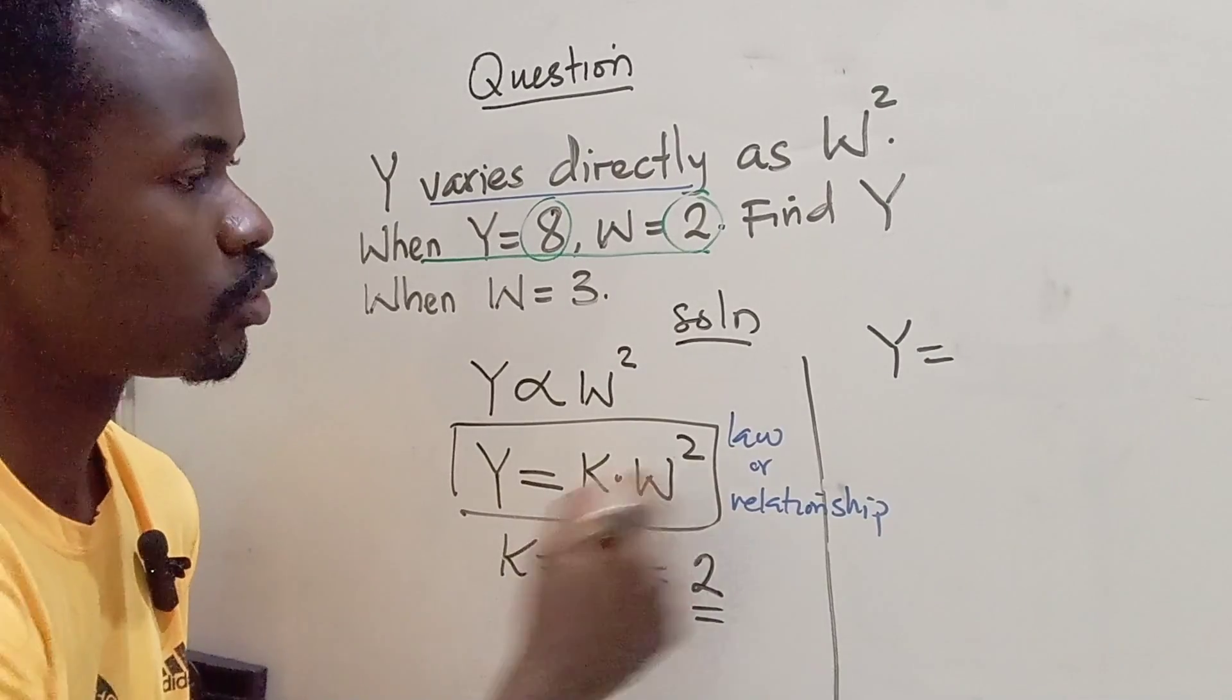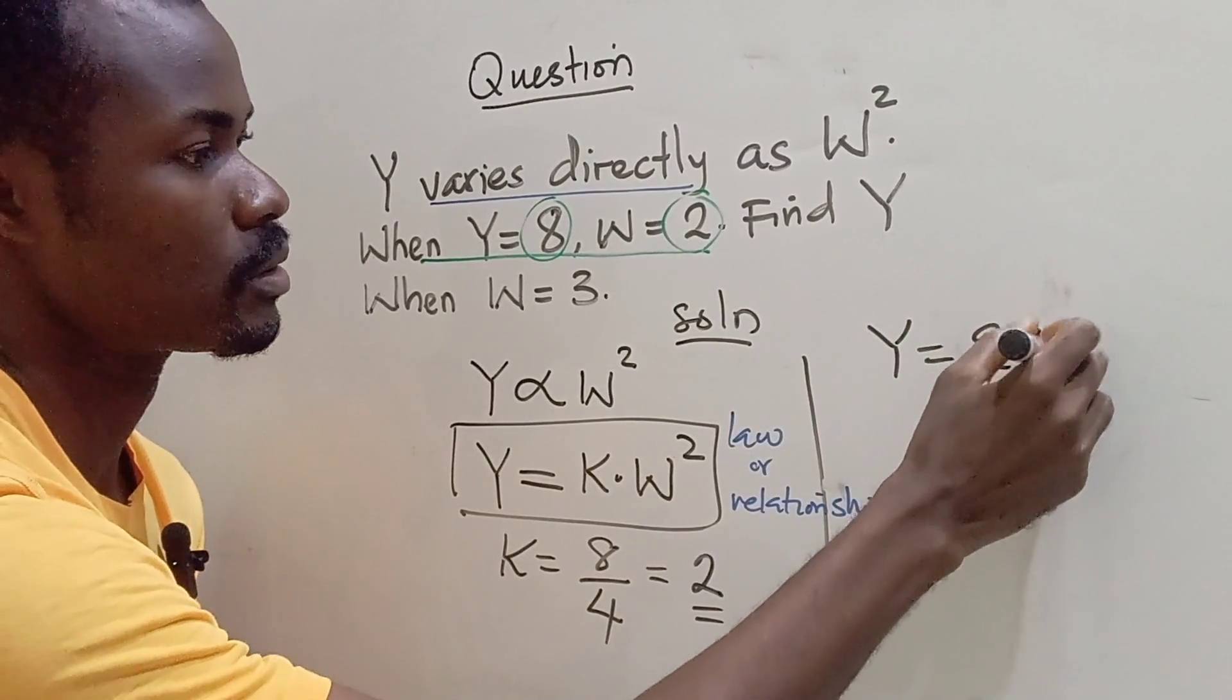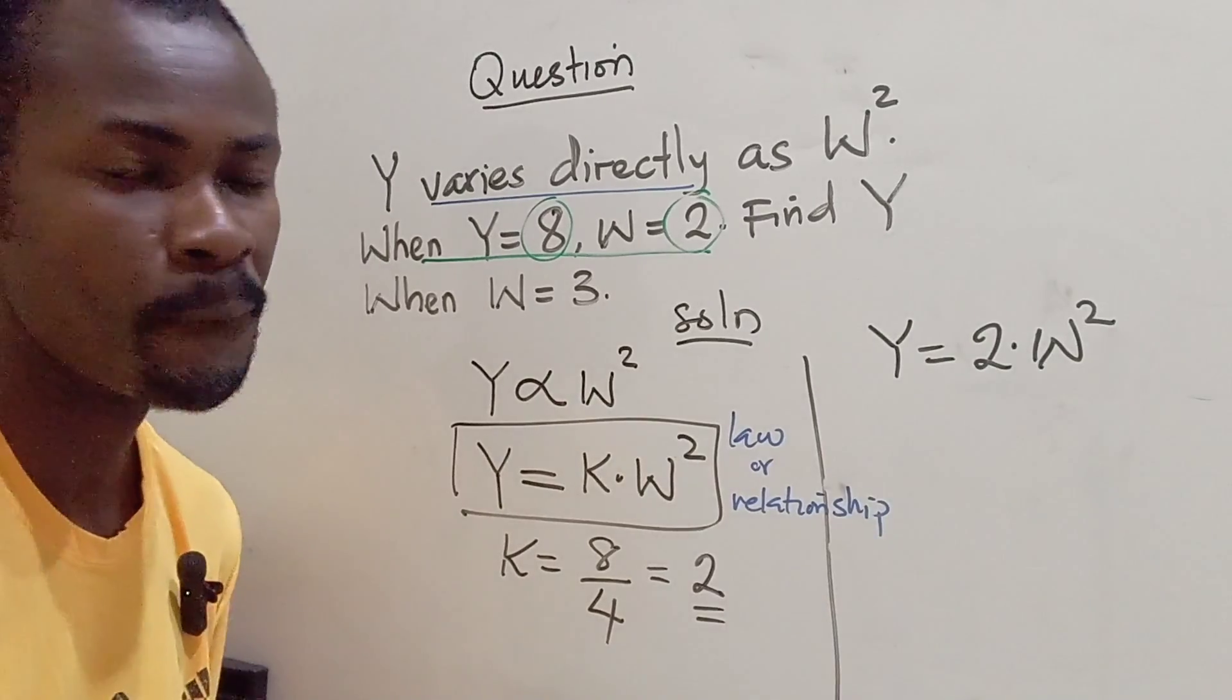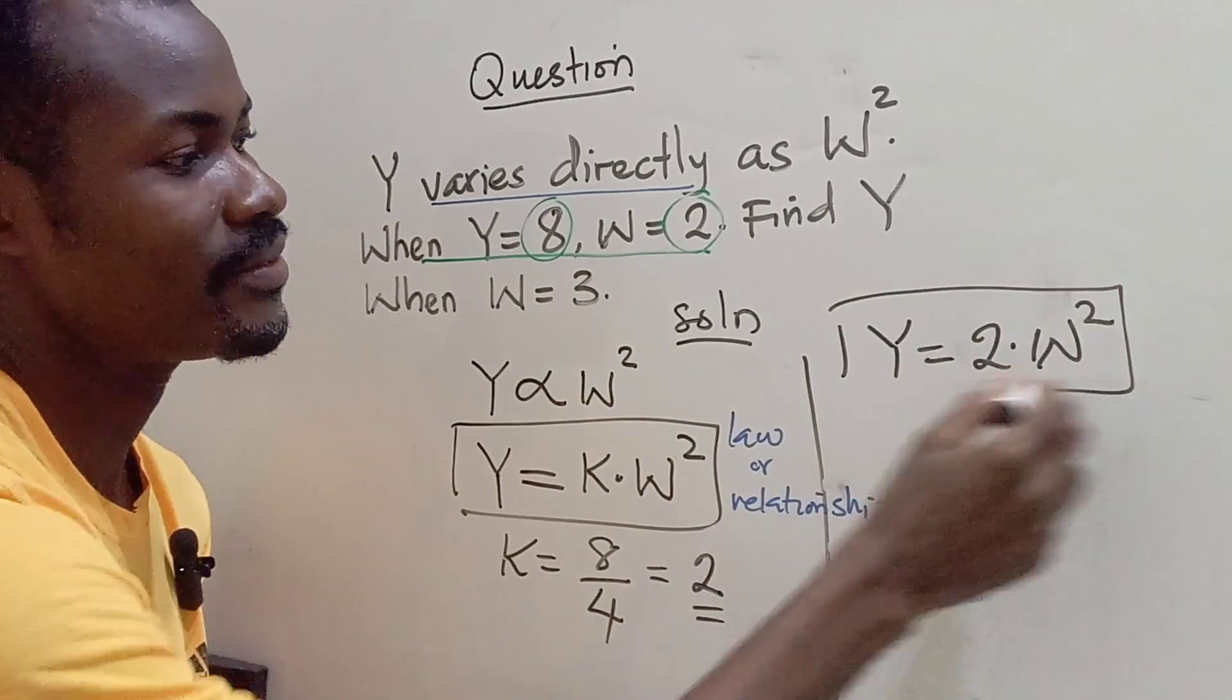So our Y equals, K is 2 times W squared. So this equation is very important.